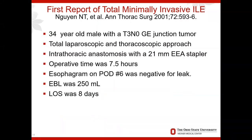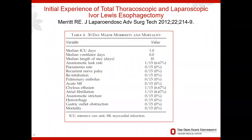The first report of a totally minimally invasive Ivor Lewis esophagectomy was reported in 2001. The patient was a 34-year-old male who presented with a locally advanced gastroesophageal junction tumor. He underwent a total laparoscopic and thoracoscopic operation with intrathoracic reconstruction of the esophagus and stomach. The operation was very successful and the patient was discharged home on postoperative day eight. This initial experience showed very low postoperative complication and mortality rates.